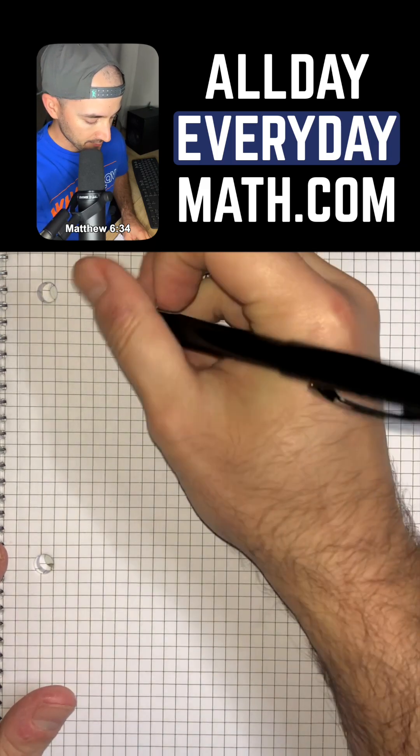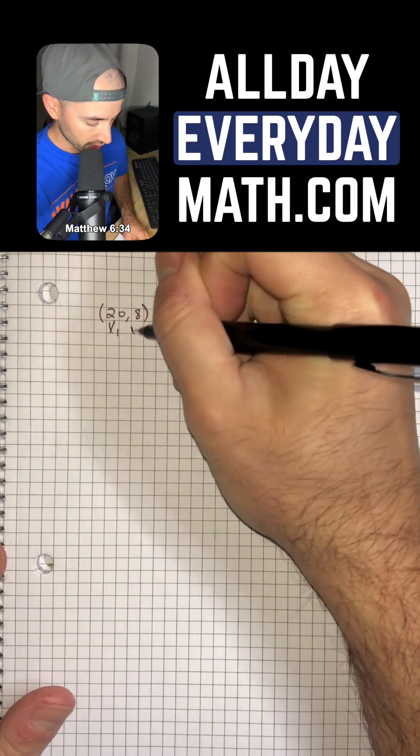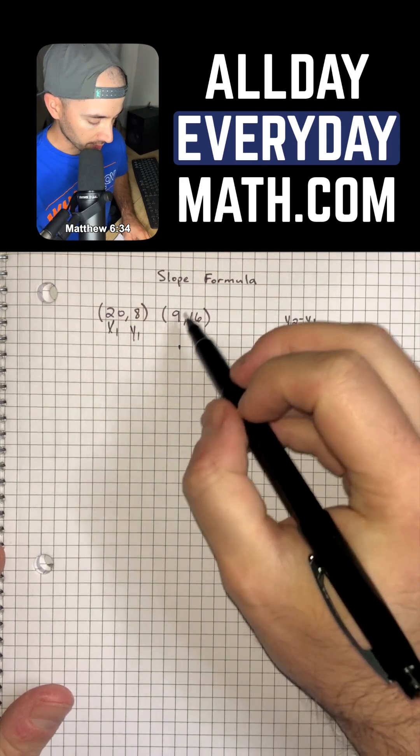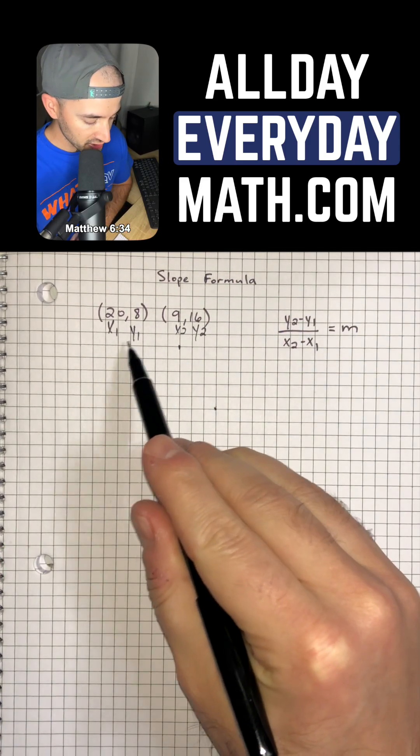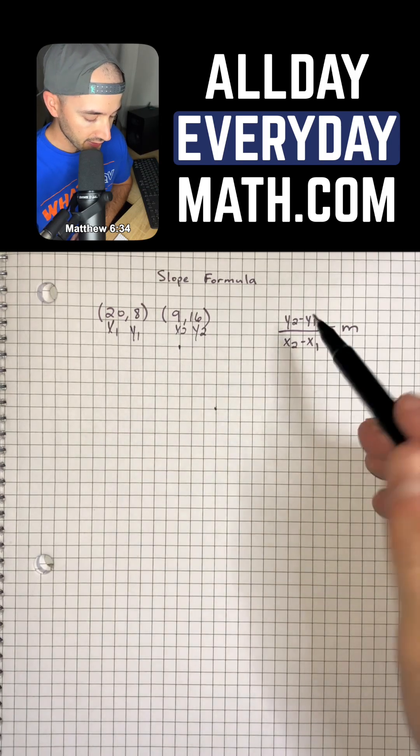So first things first is I'm going to label my points x1 and y1, and then I'm going to label the second point x2, y2. Now we can just plug in what we see into our formula.